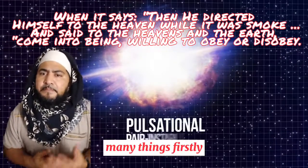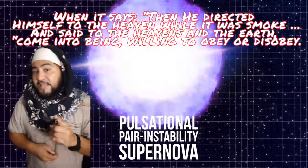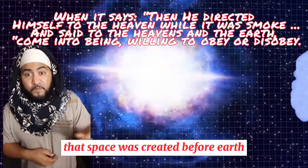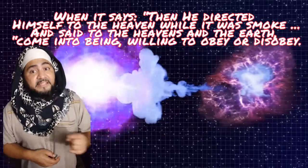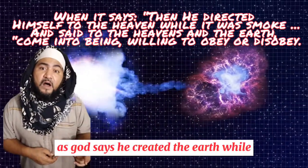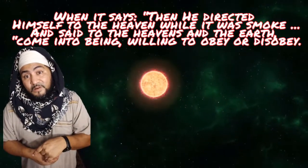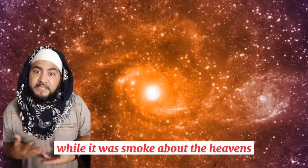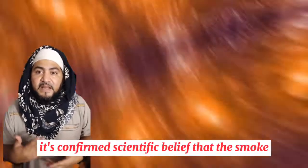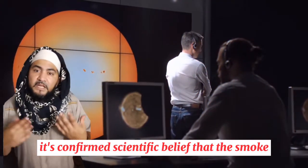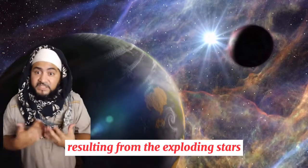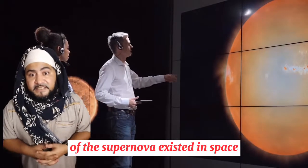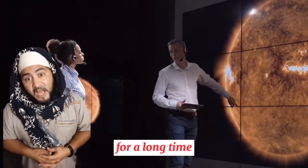From this verse we can derive many things. Firstly, that space was created before earth, as God says He created the earth while heaven was in smoke. When God says 'while it was smoke' about the heavens, it confirms the scientific belief that the smoke resulting from the exploding stars of the supernova existed in space for a long time before forming the rocky embryo of the earth.